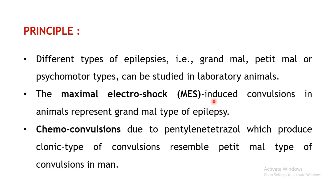The next method is chemo-convulsance, where chemicals are used to induce the convulsions. Several CNS stimulant drugs are used for this purpose. One among them is pentylenetetrazole, popularly known as PTZ. It is quite commonly used to induce the clonic type of convulsions, which resembles the petit mal type of epilepsy in human beings.